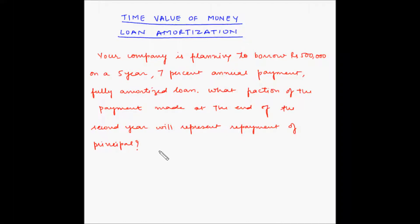Welcome to another video on time value of money, where we will look at an example of loan amortization. Your company is planning to borrow rupees 500,000 on a five-year, 7% annual payment fully amortized loan. What fraction of the payment made at the end of the second year will represent repayment of principal?